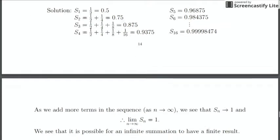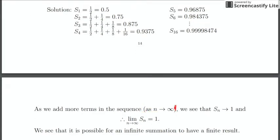As we add more terms in the sequence — as we let n go to infinity by applying this limit — we're going to get that the summation goes to 1. So we can say that the limit as n goes to infinity for this particular series, when we add those terms up infinitely, we're going to get just 1. We see again that it is possible for an infinite summation to have a finite result. Now I'm going to look at this exact same summation geometrically to show you exactly why this is working the way it is.